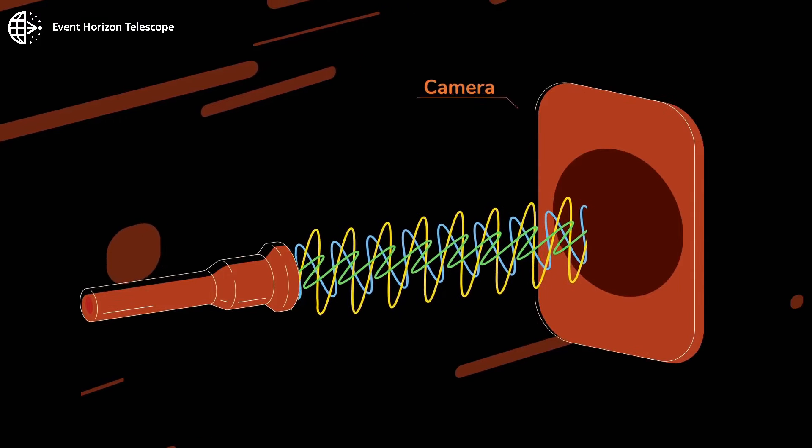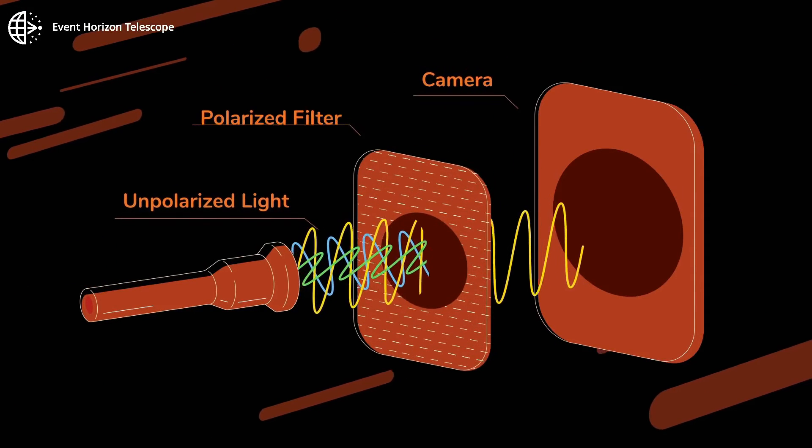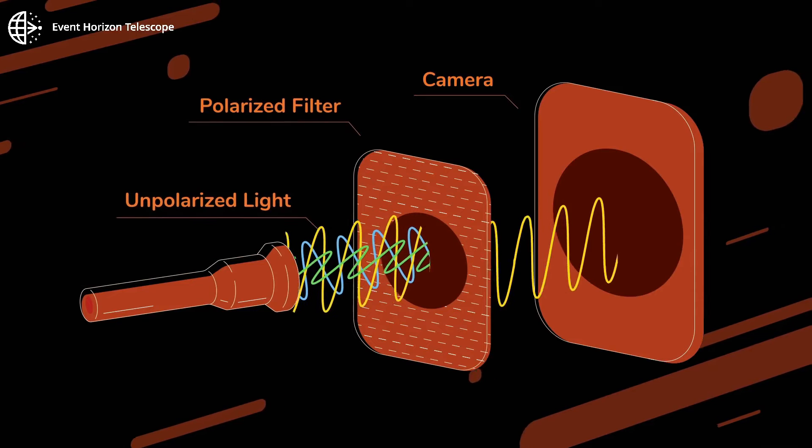Light produced by a torch is unpolarized. When we place a polarized filter in between, the light becomes polarized.